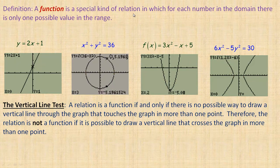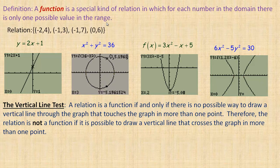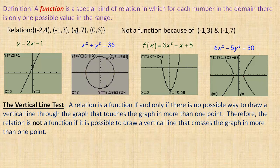A function is a special kind of relation in which for each number in the domain, there is only one possible value in the range. Looking at this set of ordered pairs: negative 2 four, negative 1 three, negative 1 seven, zero six — these two ordered pairs have the same x value of negative 1, which is why that's not a function. Having two points with the same x value means it's not a function.